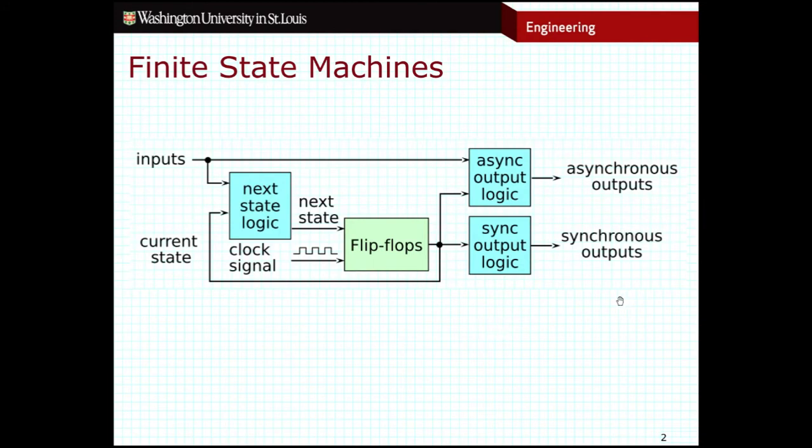We can see, just to refresh your memory, that the way a finite state machine circuit works is that I take in my inputs and with some logic I need to determine what my next state will be. So that's a factor of the inputs as well as the current state that I'm in.